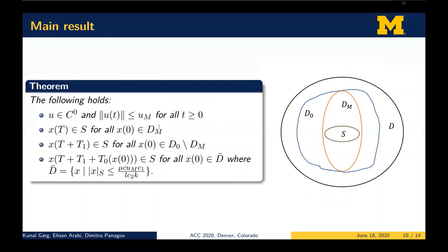The main result can be stated compactly as follows. Although the controller is defined piecewise, we can show it is continuous and the control input bounds are always satisfied. If the closed-loop trajectory starts within D_m, it reaches set S within the prescribed time T. If it starts outside D_m but inside D_0, it reaches the set within a finite fixed amount of time T plus T_1, where T_1 is a function of the bounds on the Lyapunov function and related variables. Finally, if the trajectory starts outside D_0 but inside a set D_bar, the closed-loop trajectories still reach set S within a finite amount of time that may depend on the initial condition.